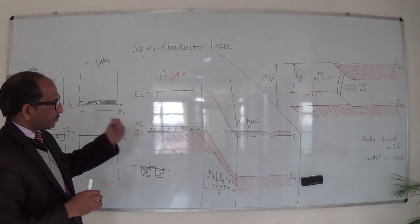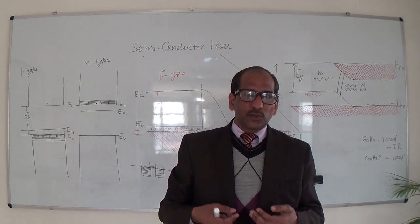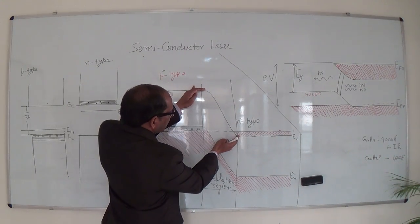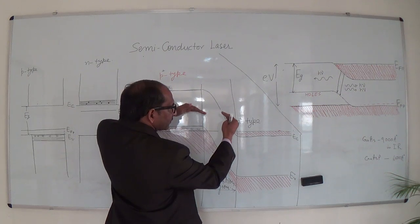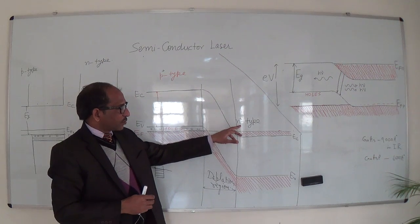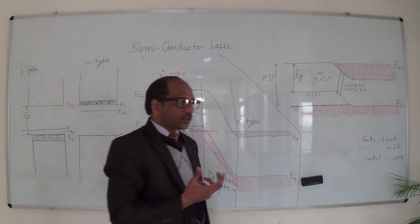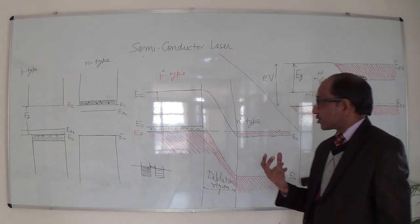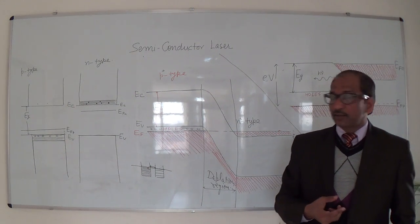When we apply external forward biasing and the current is very small, the depletion region reduces because the height of the potential barrier starts to decrease. As a result, electrons from the conduction band jump into the valence band and we observe some photons. This spontaneous emission process occurs at very small current and this is the function we observe in LEDs.